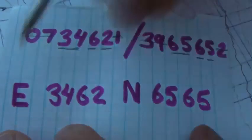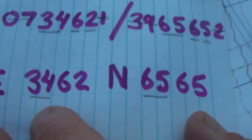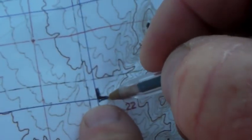So first I'll plot and mark the lower left corner of grid square 34, 65. 34, 65. It gives me this corner here and I'll mark it.